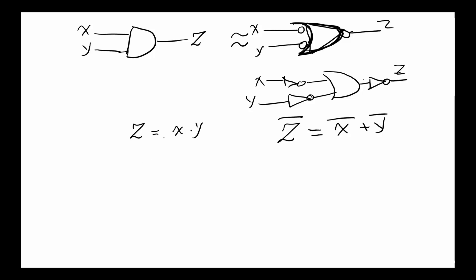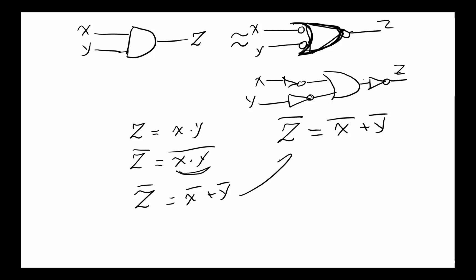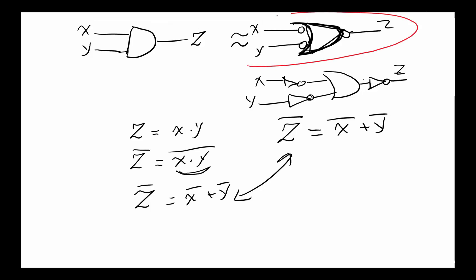We can apply De Morgan's theorem to either side. If we complement both sides of the equation Z-NOT equals X-NOT OR Y-NOT, then apply De Morgan's theorem to that portion, we get back to Z equals X AND Y. That is the proof that both of these representations are the same.